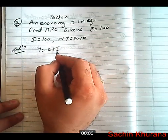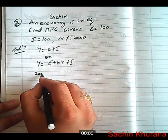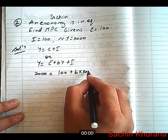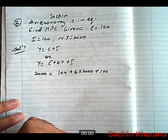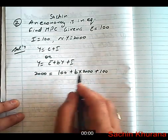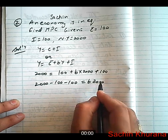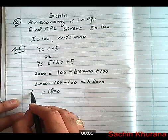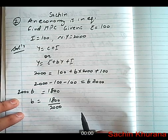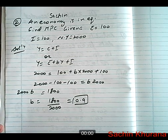Y is equal to C plus I, or Y is equal to C bar plus BY plus I. Substituting the values: 2000 is equal to 100 plus B into 2000 plus 100. So 100 plus 100 equals 200, and 2000 minus 200 is equal to B into 2000. So 1800 is equal to 2000B, giving B equal to 1800 upon 2000. So MPC is equal to 0.9.